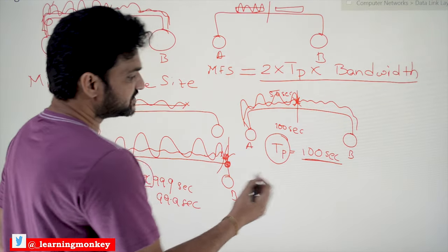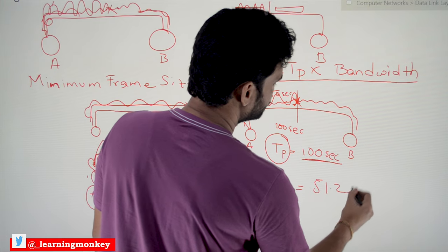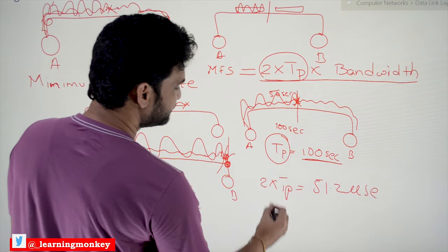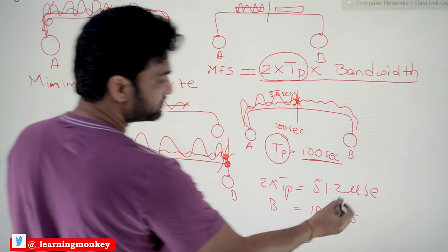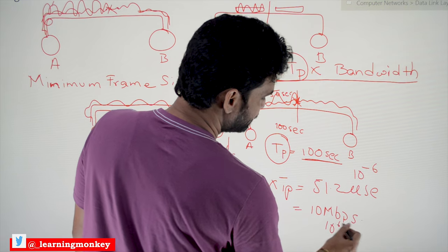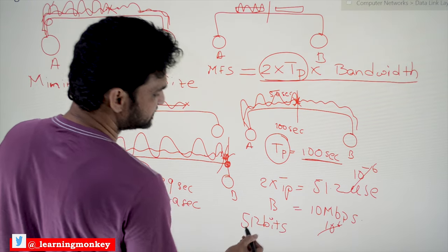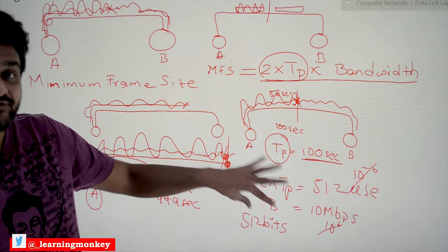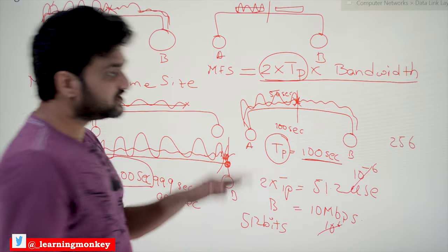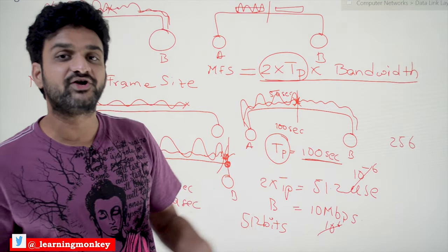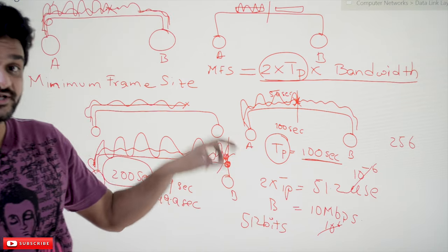For example, if 2×Tp = 51.2 microseconds and bandwidth = 10 Mbps, then the number of bits = 51.2×10⁻⁶ × 10×10⁶ = 512 bits. So the minimum frame size is 512 bits. If a frame has fewer bits, say 256 bits, then 256 dummy padding bits are added to bring it up to 512 bits before transmission. That is how things work in CSMA/CD.